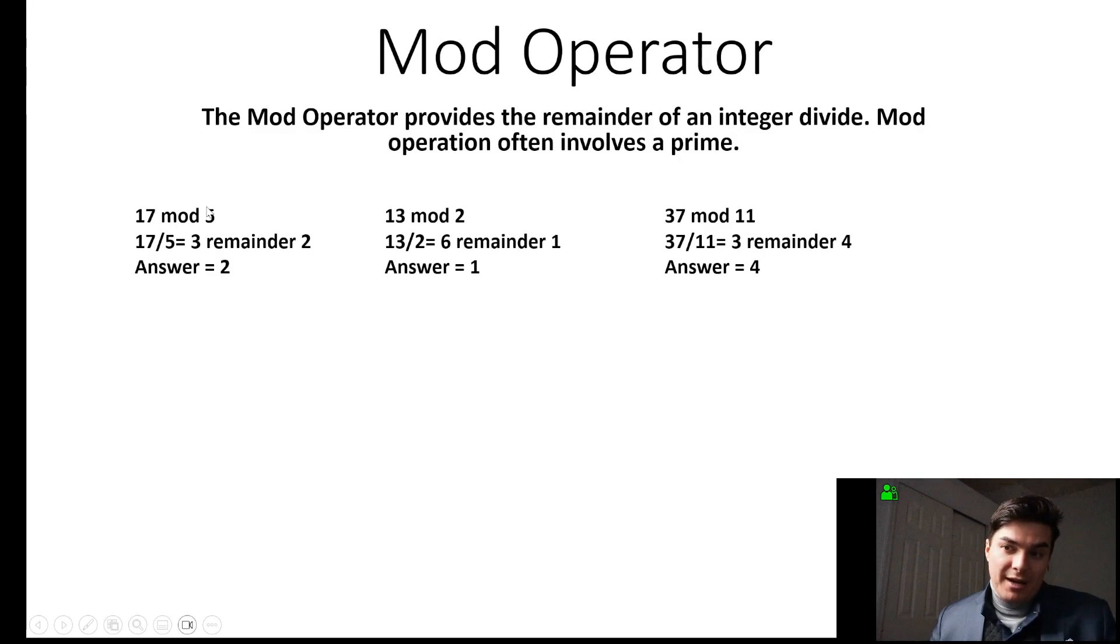So 17 mod 5, that's 17 divided by 5, which is 3, and giving us the remainder of 2. So what we're looking for is the remainder, because it's 5, 10, 15. So 17 minus 15, answer is 2.